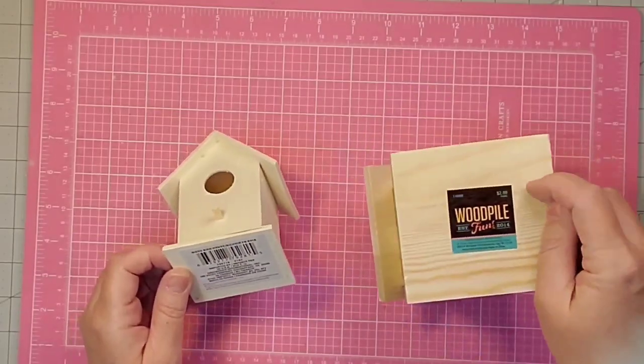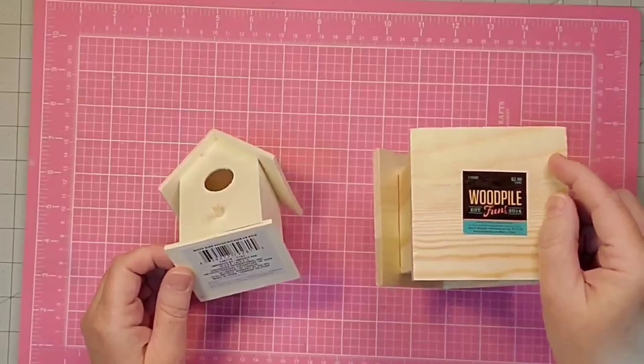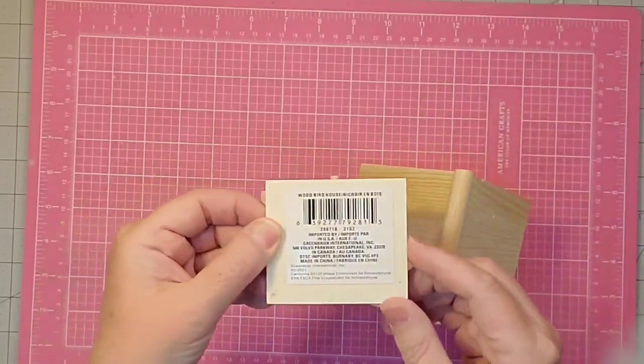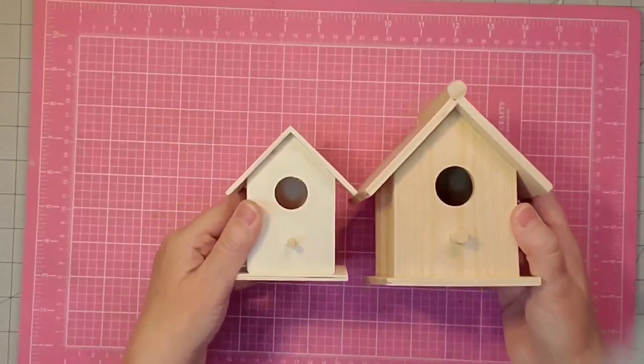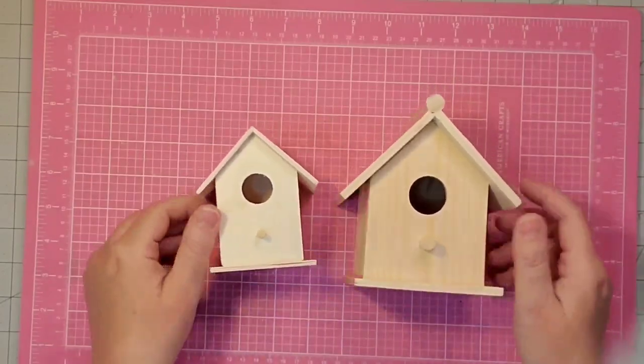One of the items I'm going to be using is a wooden birdhouse. I got it at Hobby Lobby for $2.99, and I just wanted to show you the difference between it and the ones you get from the Dollar Tree.